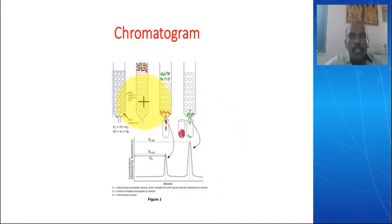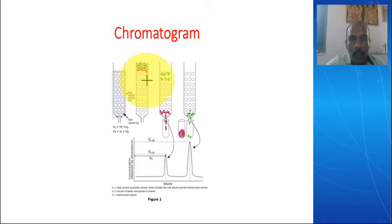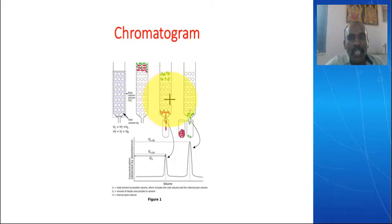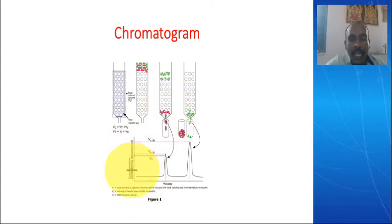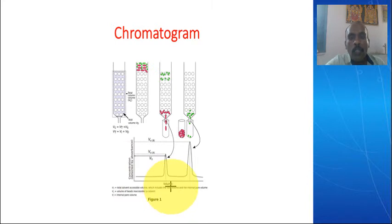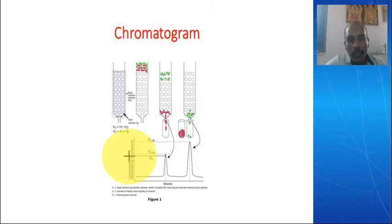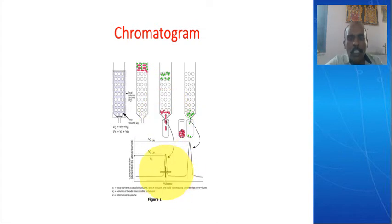Here is a column filled with gel beads. Pink color substances are the larger ones and green color substances are the smaller ones. When we run the column, the pink color comes out first because it is not able to enter into the beads and is easily eluted out. When we take a graph with time on the x-axis and absorbance on the y-axis, for large size particles the peak shows first. This visual output is the chromatogram.